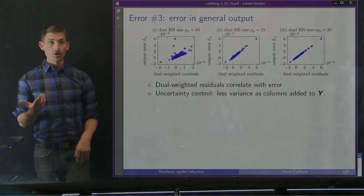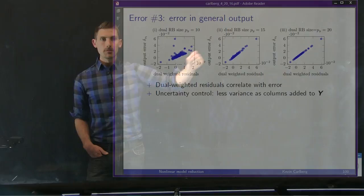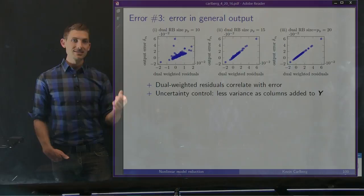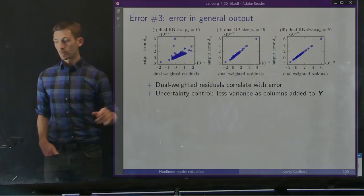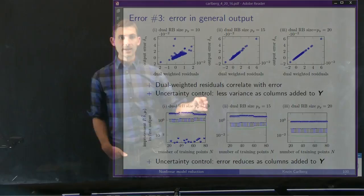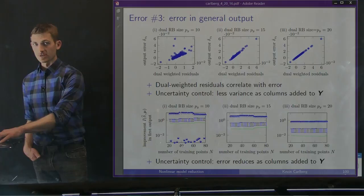Considering error in the general output, we proposed the identity matrix as transformation and the dual-weighted residuals as indicators. As we increase the dual reduced basis dimension, we get a better and better model. Since the problem is linear, in the limit we expect a perfect linear relationship between indicators and error. This yields a very low variance Gaussian process and enables uncertainty control — we can control how good our error indicator is by solving higher-fidelity dual-weighted residual problems. Plotting expected improvement, as we add columns to Y and increase ROM fidelity, we get up to two orders of magnitude improvement with a dimension-20 reduced order model for the adjoint solution.